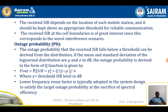The SIR must be above the threshold level. The received SIR at cell boundaries is of great interest because it is most likely to interfere with neighboring cells and should be minimized. Outage probability is defined as when the received SIR falls below a threshold level, derived from a statistical distribution.